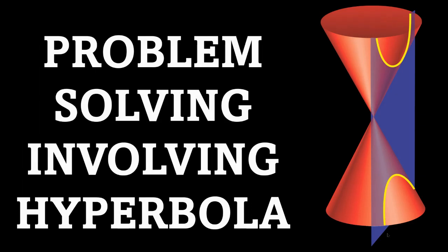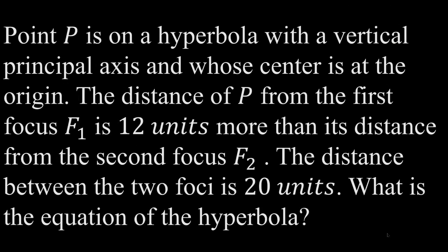Good day everyone. Today we are going to solve a problem involving hyperbola. Point P is on a hyperbola with a vertical principal axis and whose center is at the origin. The distance of P from the first focus F₁ is 12 units more than its distance from the second focus F₂. The distance between the two foci is 20 units. What is the equation of the hyperbola?